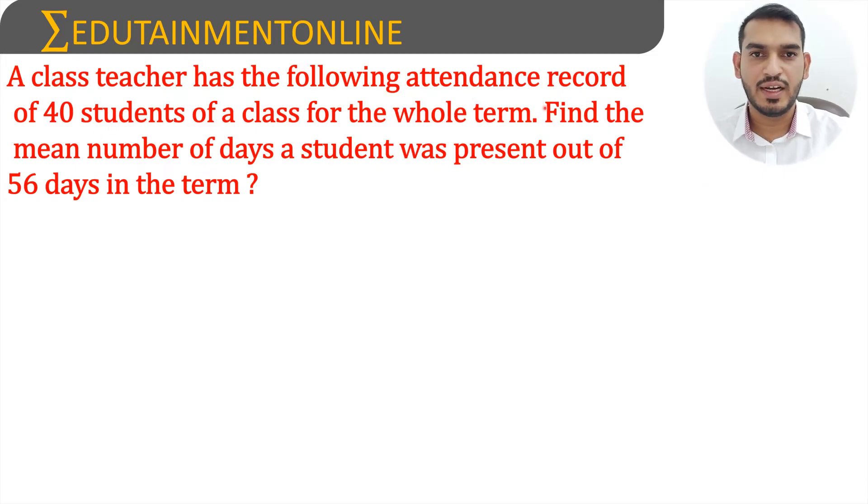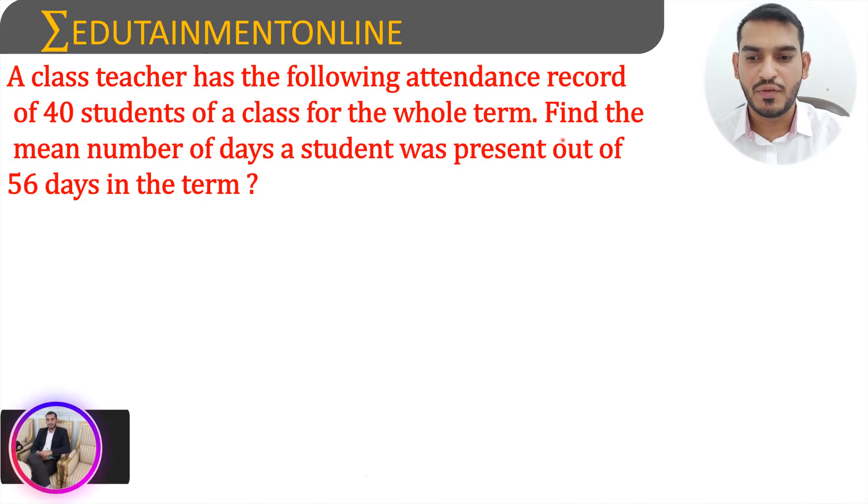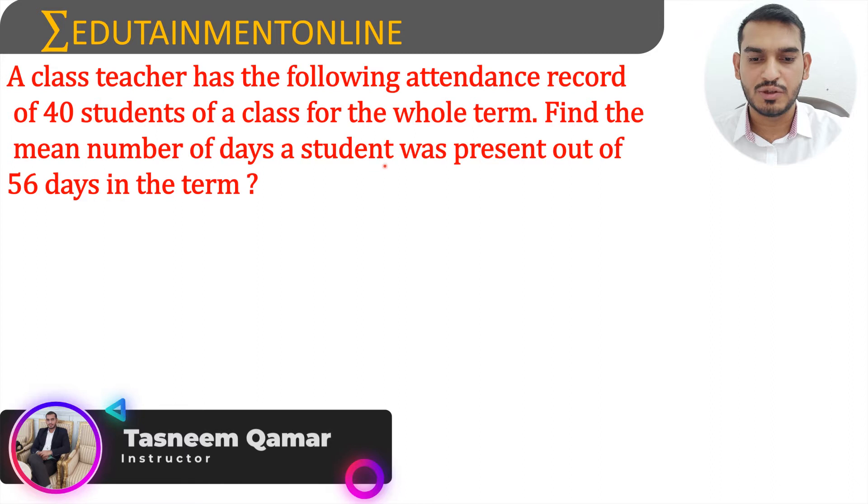A class teacher has the following attendance record of 40 students of a class for the whole term. Find the mean number of days a student was present out of 56 days in the term.